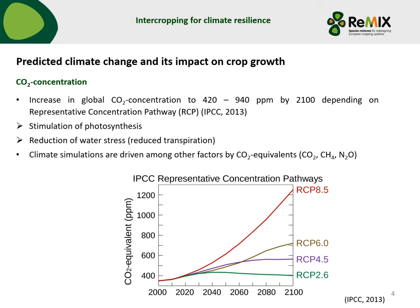First of all I will give you a short background about the predicted climate change and its impact on crop growth. The global CO2 concentration is expected to increase to 420 to 940 ppm by the year 2100. This large range depends on the results of different representative concentration pathways.